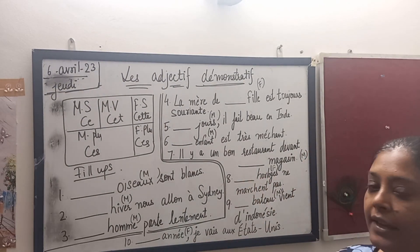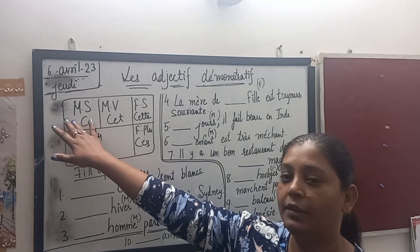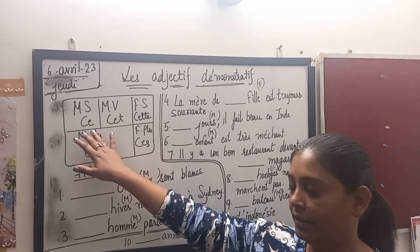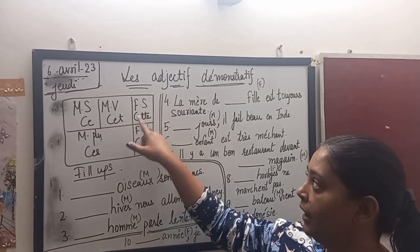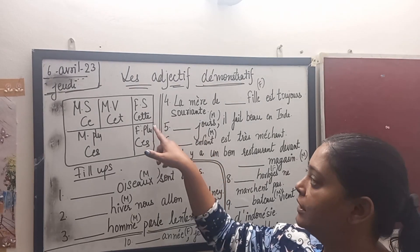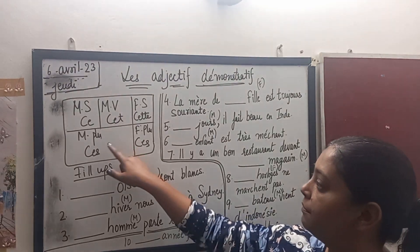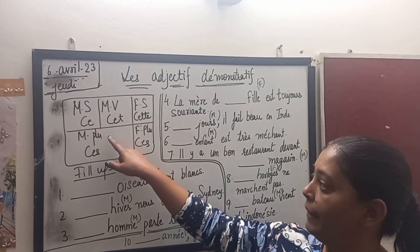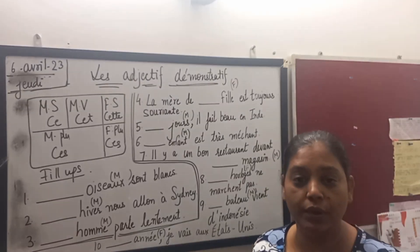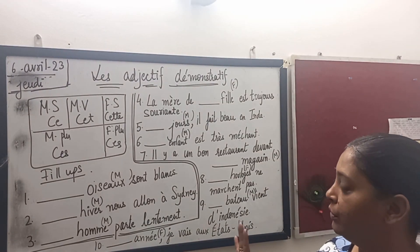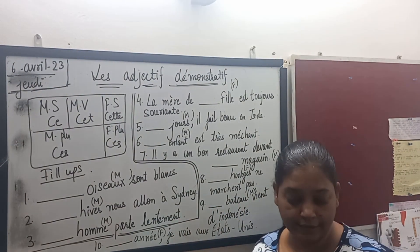In French, for nouns that are masculine singular we use 'ce', for masculine vowel singular we use 'cet', and for feminine singular we use 'cette' (C-E-T-T-E). But for the plural, whether it is masculine or feminine, we use 'ces'. So today we are going to learn how to fill in the sentences.